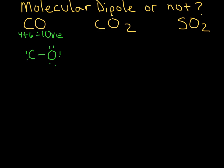Ten. Now we have ten electrons distributed, but carbon does not have an octet. So what do we need to do? We need to share — to form, in this case, a triple bond. We're going to lasso that pair of electrons and this pair of electrons. And when I redraw it, we end up with the carbon monoxide Lewis structure.